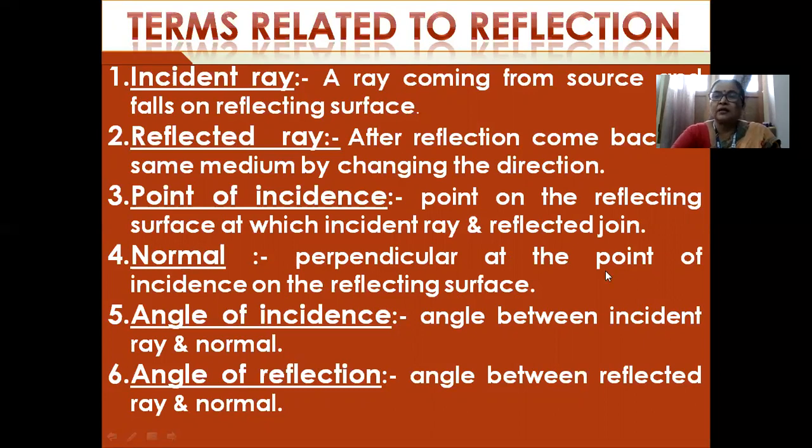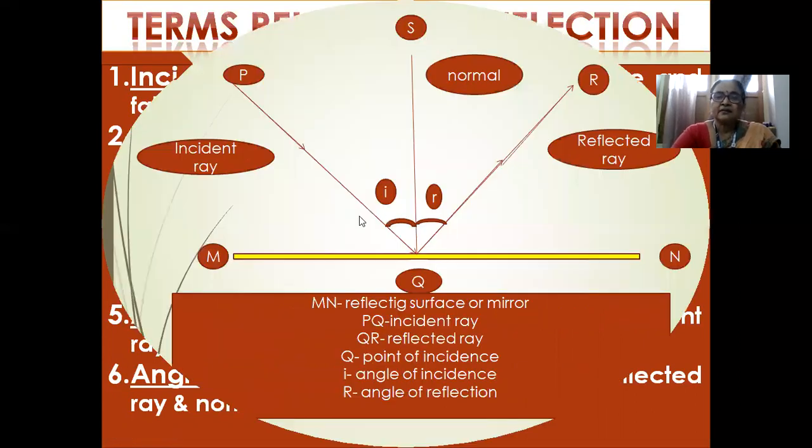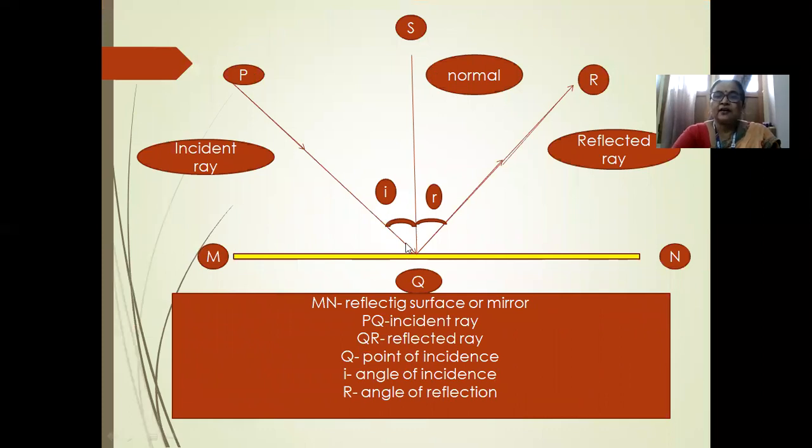Normal, perpendicular to the point of incident on the reflecting surface. Angle of incidence, angle between incident ray and normal. Angle of reflection, angle between reflected ray and normal. And that is the figure. This is incident ray, PQ is incident ray, QR is reflected ray. O is normal, O is the point of incidence, MN is the mirror. And incident ray is showing you here. And this is I and R. These are normal and incident ray, angle of incidence and normal and reflected ray, angle of reflection. So today, we are just so much.